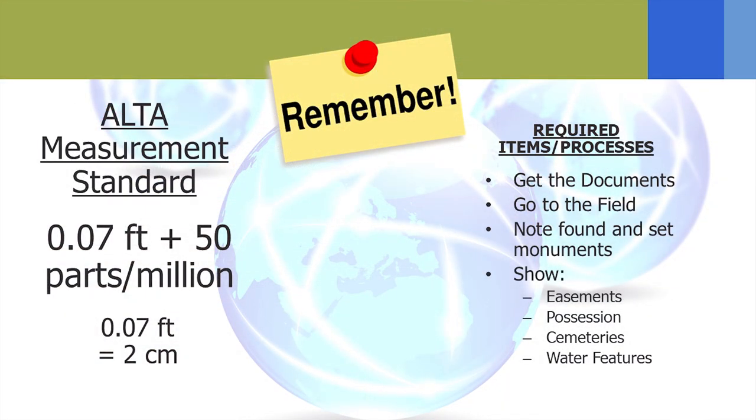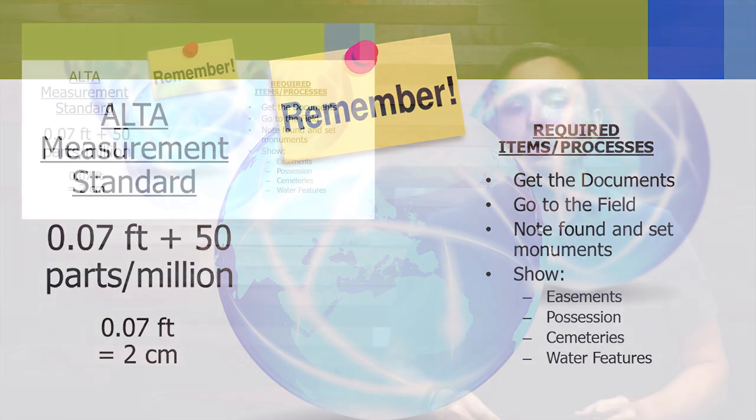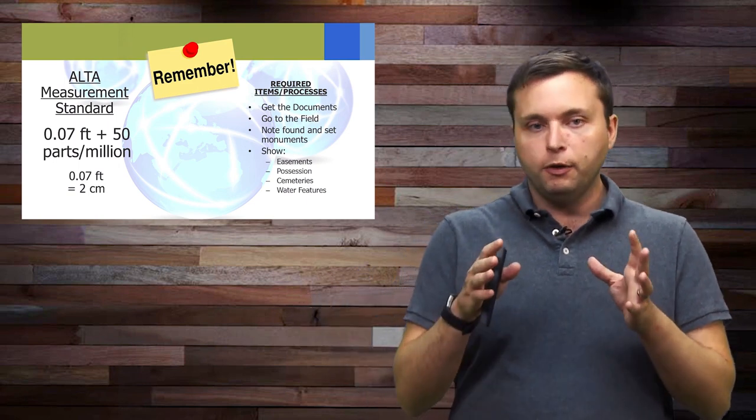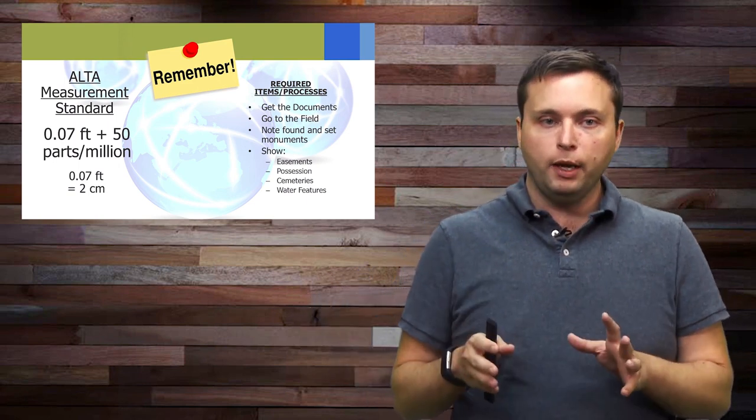A best practice for ALTA surveys is that your measurement must be 0.07 feet plus 50 ppm in order to be correct, in order to be minimally accurate and precise. That's a relative position. Each point has to be within this error ellipse. If you're outside the ellipse, your ALTA survey fails. If you're inside the ellipse, your survey is good.